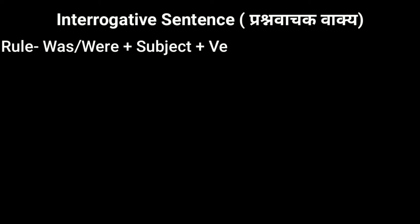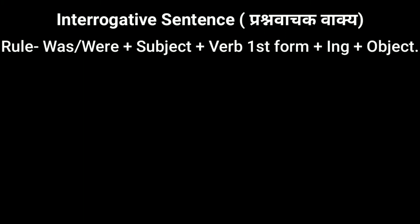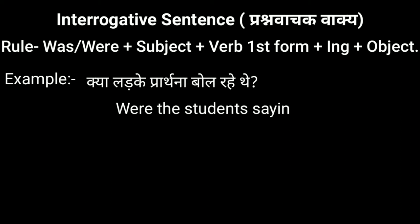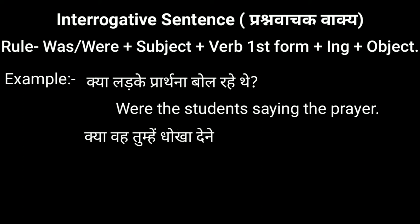Next we come to interrogative sentences. To make these we use: Was/Were + Subject + verb first form + ing + object. For example, 'क्या लड़के प्रार्थना बोल रहे थे?' — 'Were the students saying the prayer?' In this, 'were' is the helping verb (meaning 'क्या'), 'the students' is the subject, and 'saying' is the verb first form plus ing.